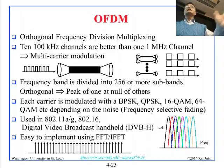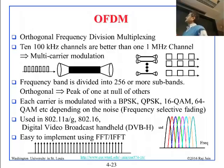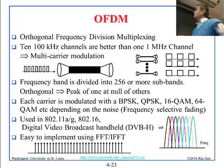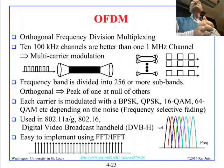OFDM is now used everywhere. It is used on wired networks such as DSL — the wired network that comes to your home — as well as all wireless networks including LTE, WiMAX, and 802.11. It is easy to implement using Fast Fourier Transform and Inverse FFT, and we can handle thousands of carriers using FFT chips, also called DSP (digital signal processing) chips.